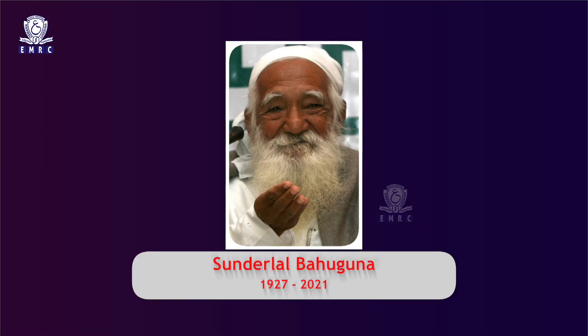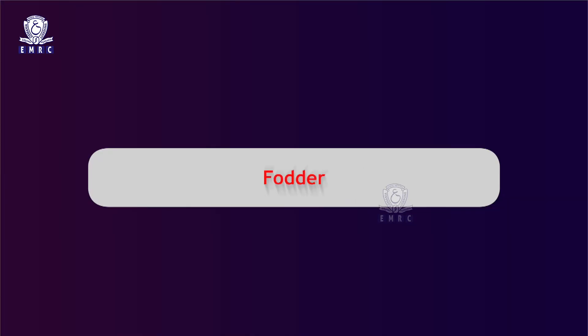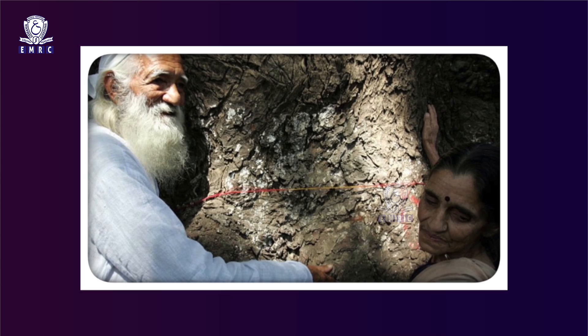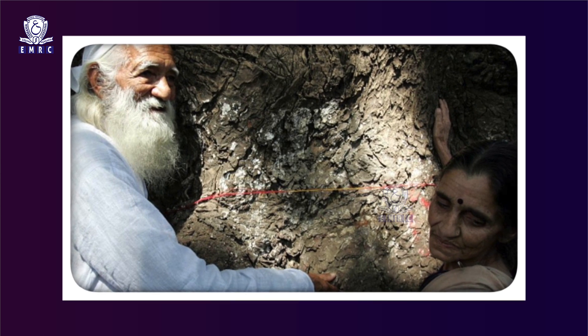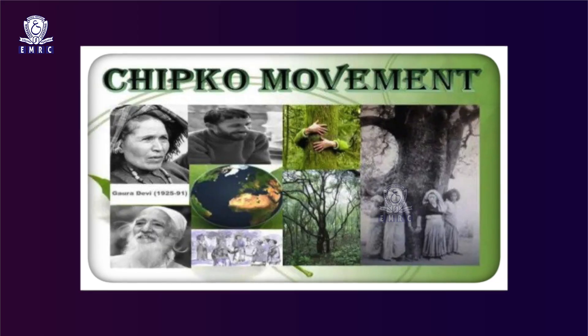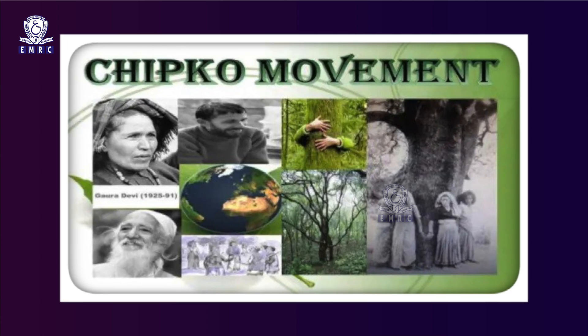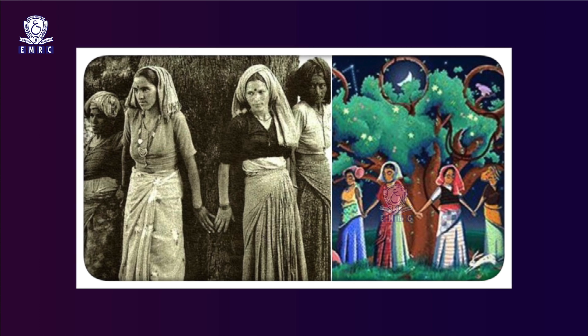This movement continued under the leadership of Sundar Lal Bahuguna in various villages. The movement's plan and slogan was to plant five F's — food, fodder, fuel, fiber, and fertilizer — to make communities self-sufficient in all their basic needs. The Chipko women believed that trees were alive and could breathe like them, and thus should be respected. Besides supporting agriculture and animal husbandry, the forest grew medicinal herbs used for healing. The Chipko movement is nationally and internationally discussed as the people's ecological movement for the protection of the natural environment.